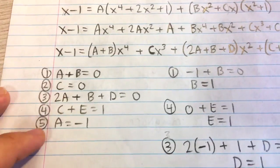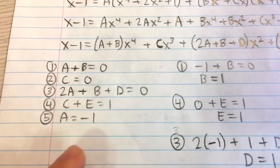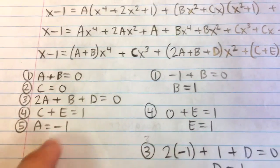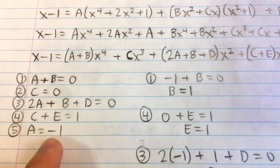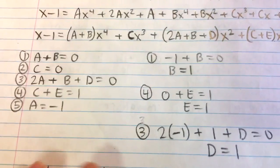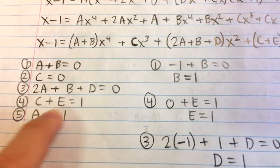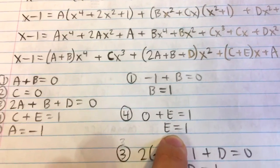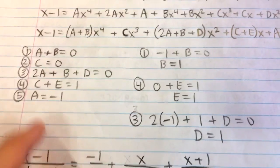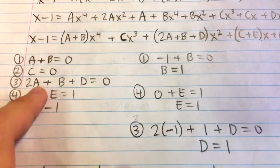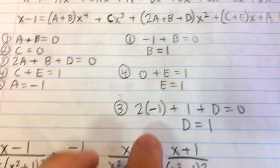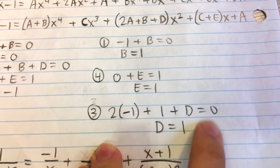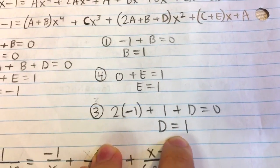Now we solve the system of equations. From equation one, A plus B equals zero, and since A equals negative one, we get B equals one. From equation four, C plus E equals one, and since C equals zero, E equals one. From equation three, 2A plus B plus D equals zero: plugging in A equals negative one and B equals one gives negative two plus one plus D equals zero, so D equals one.